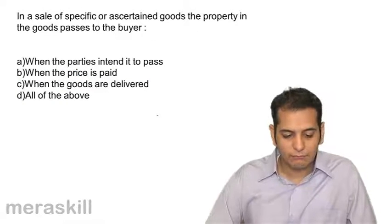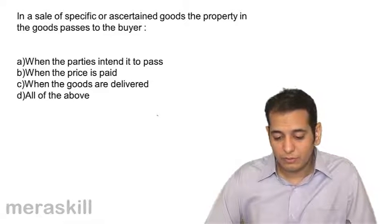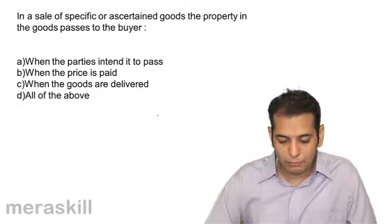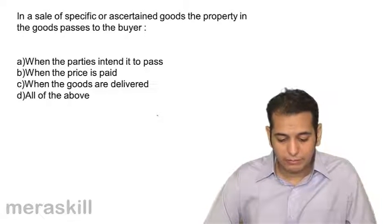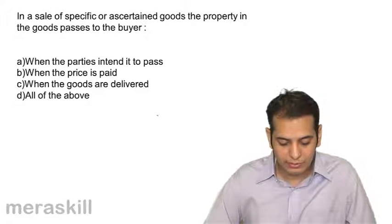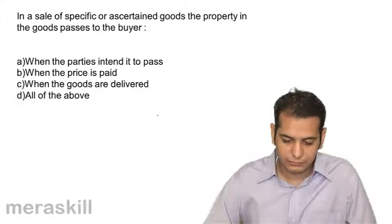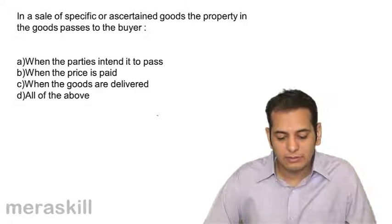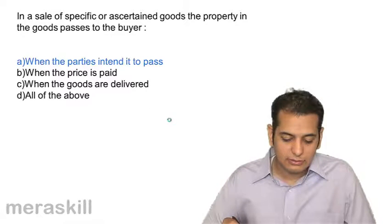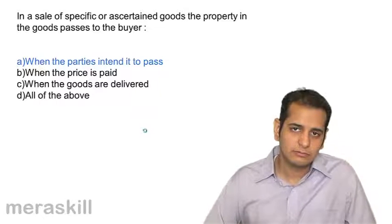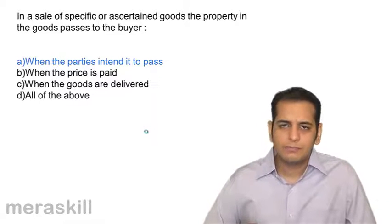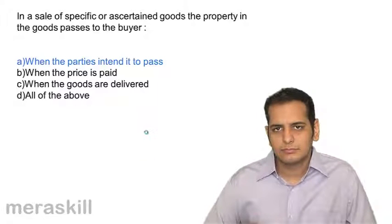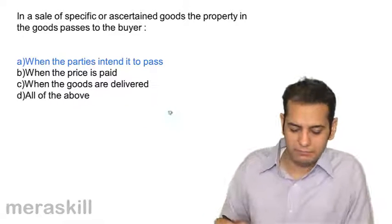In a sale of specific or ascertained goods, the property in the goods passes to the buyer when the parties intend the ownership to transfer — it is for them to decide the manner of transfer.